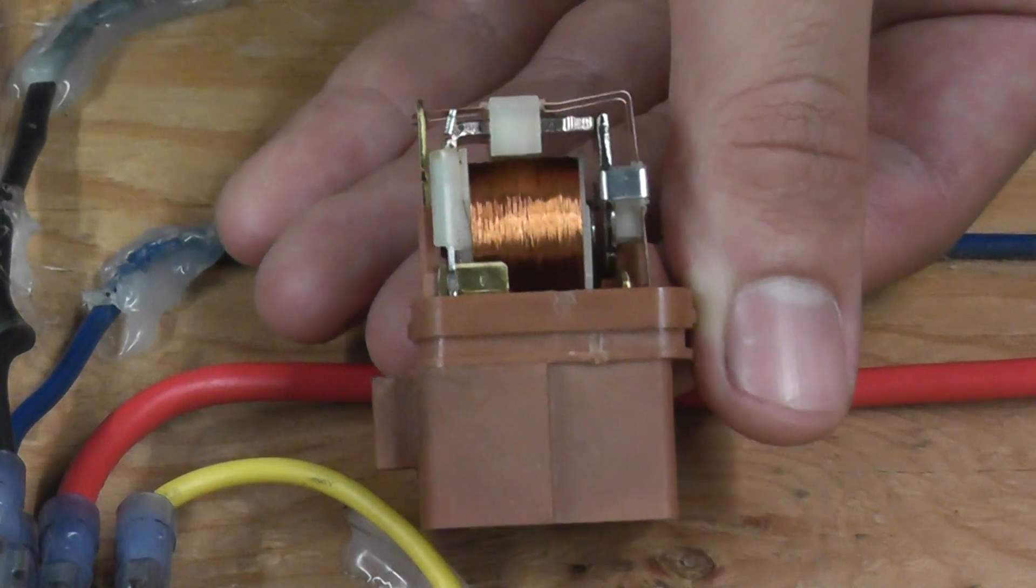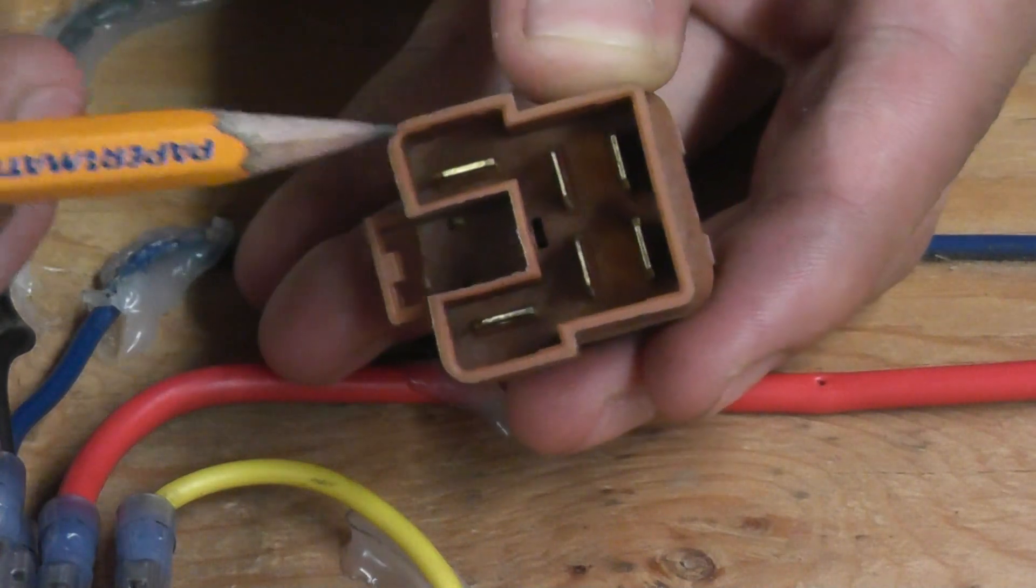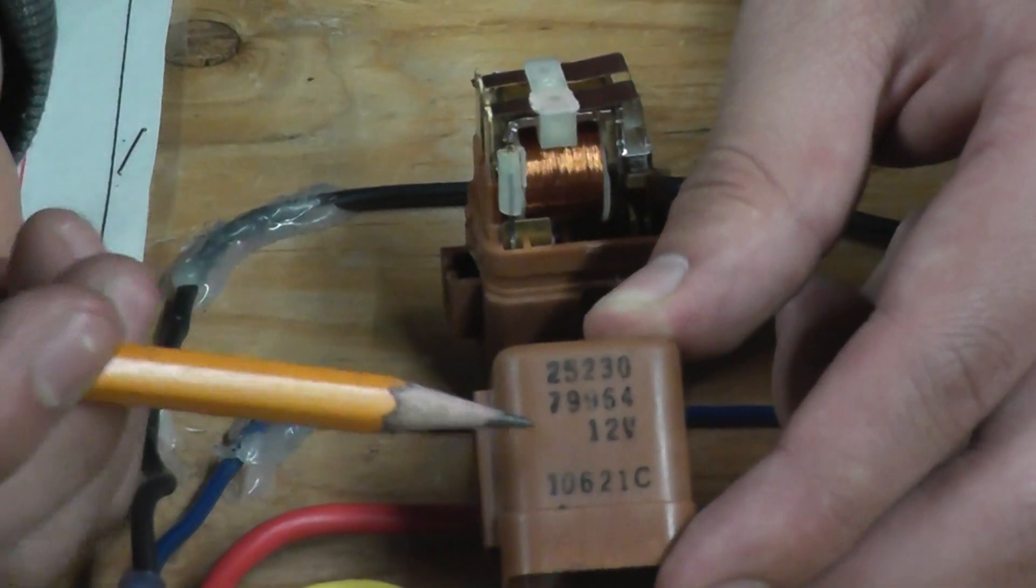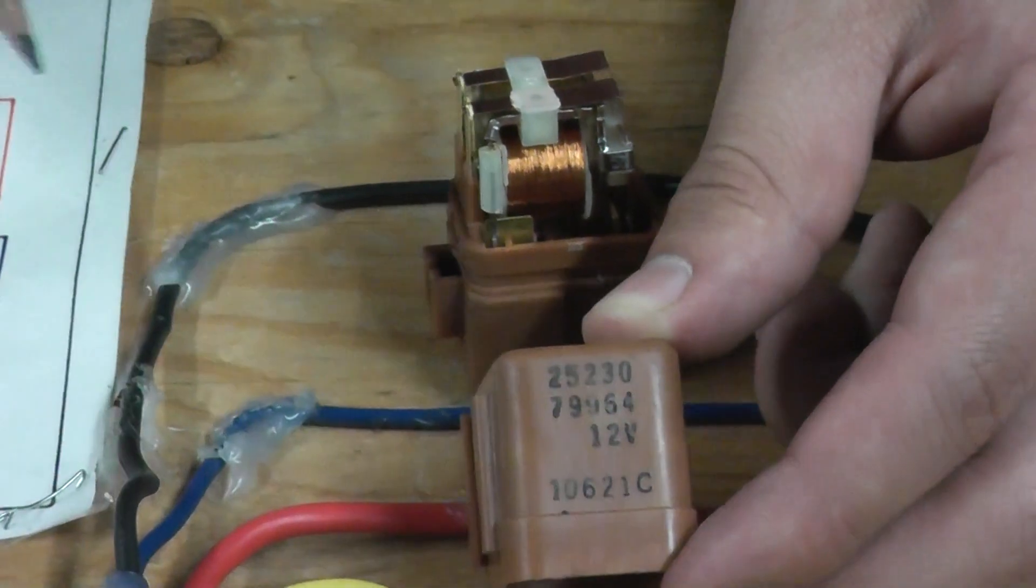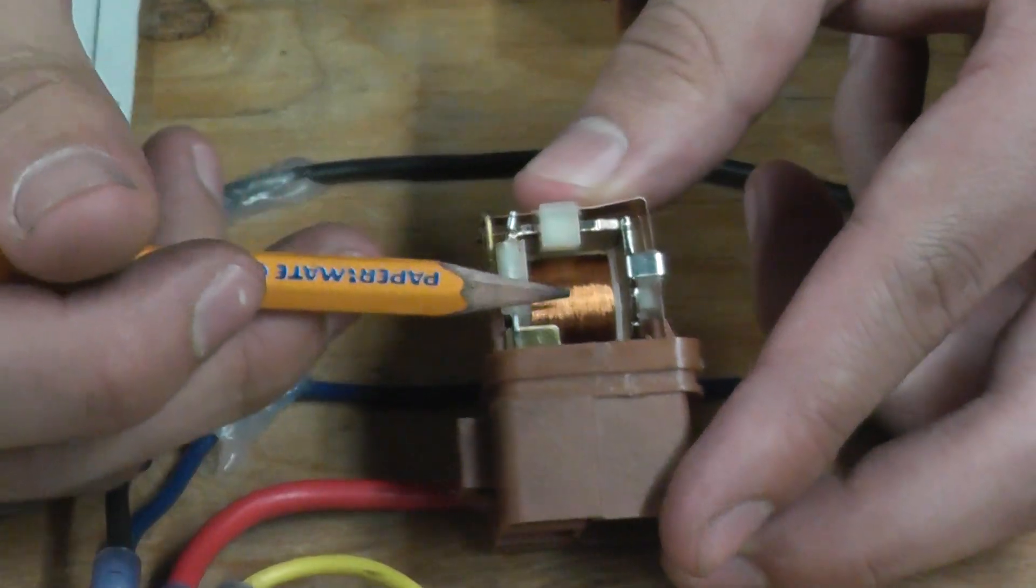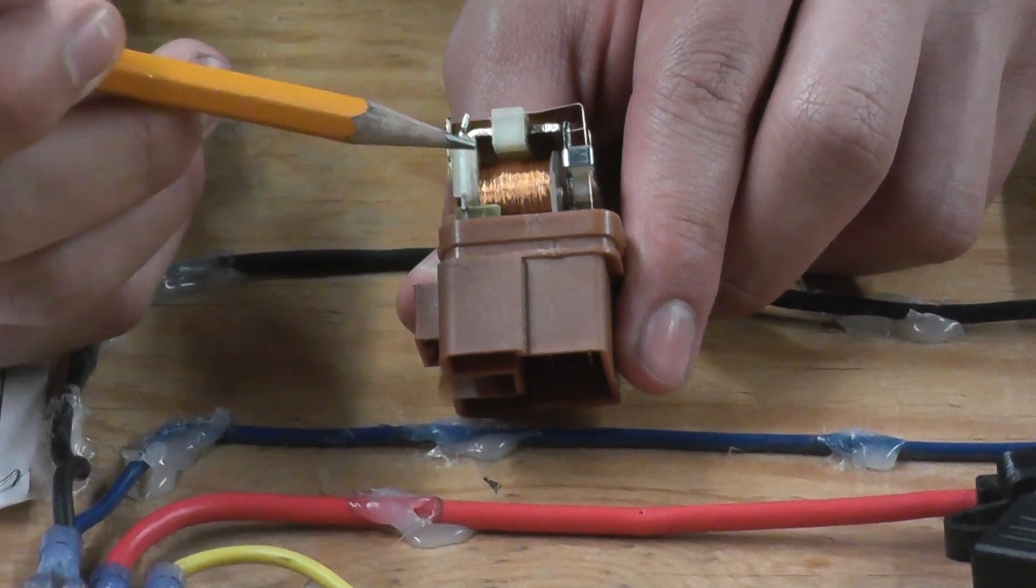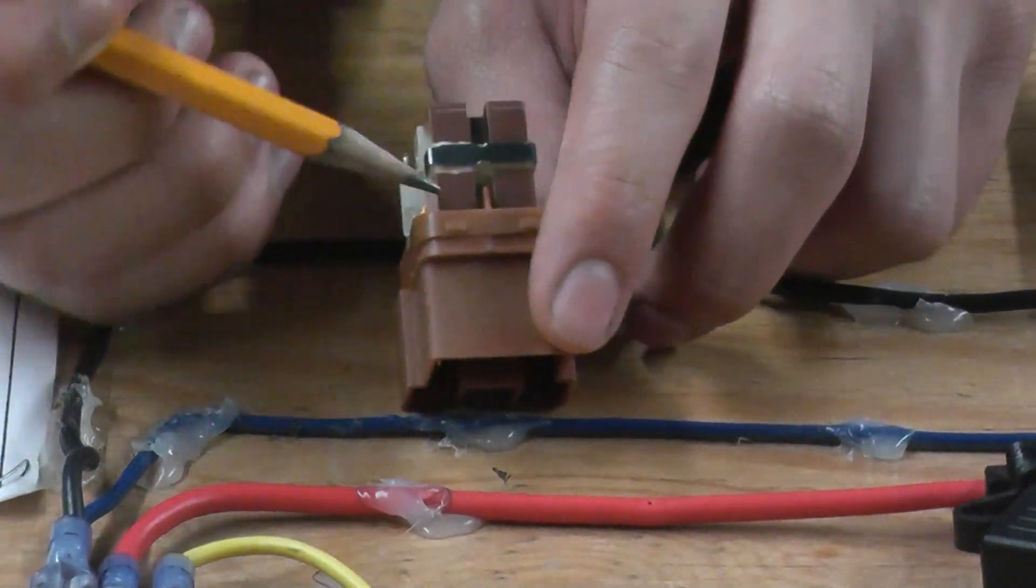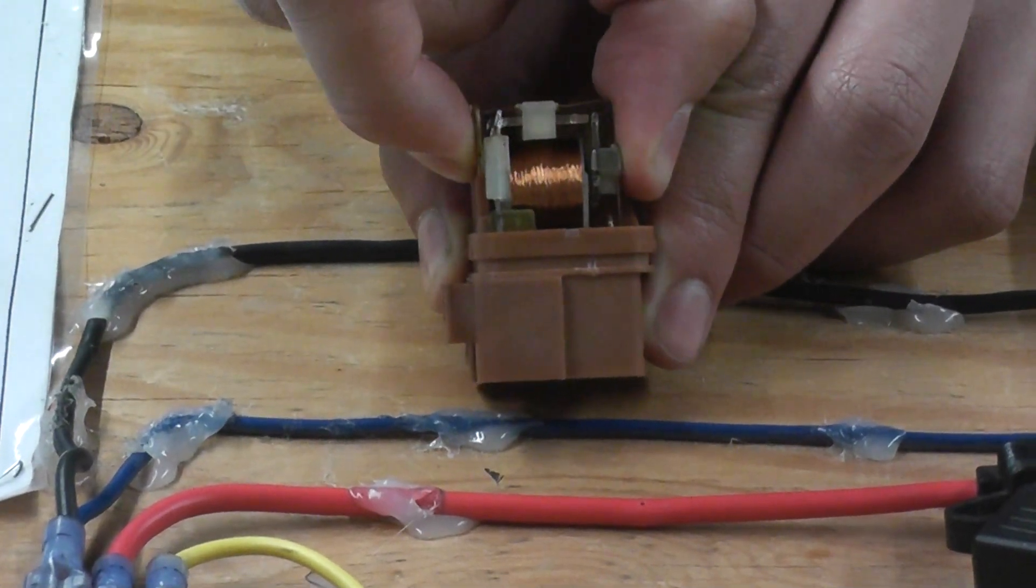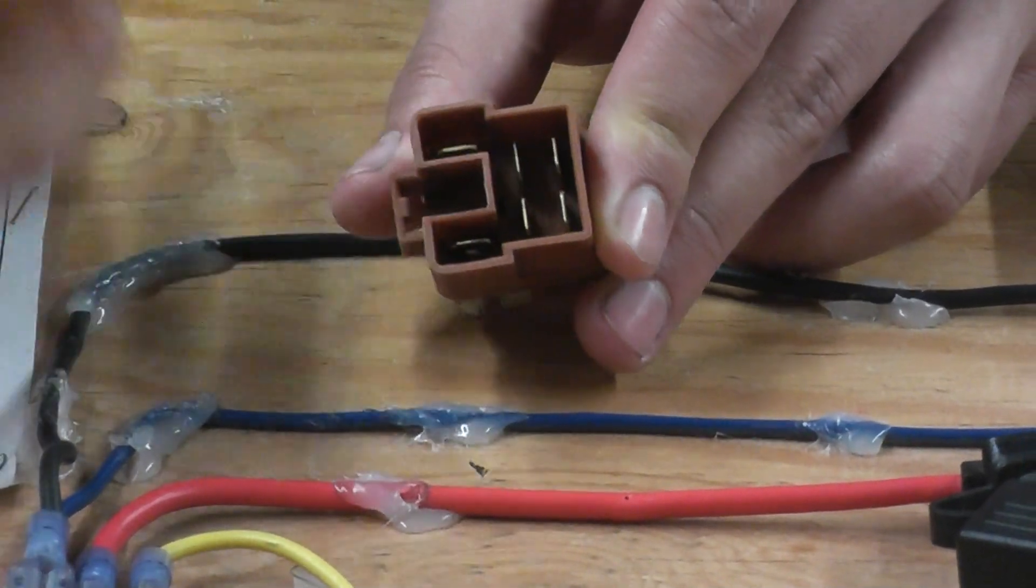The relay becomes an electromagnet when the coil gets power through these two prongs. This relay takes 12 volts. What that means is that it needs 12 volts of power to power the coil. Once the coil gets power, it turns it into an electromagnet, causing these two metal pieces to get pulled in, completing the circuit, allowing current to flow through the prongs.